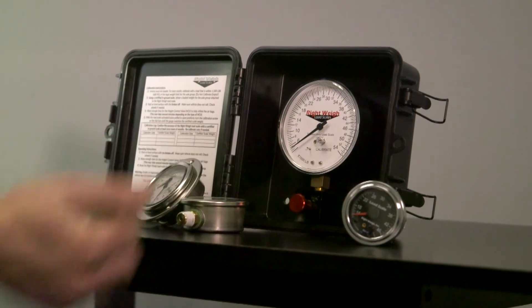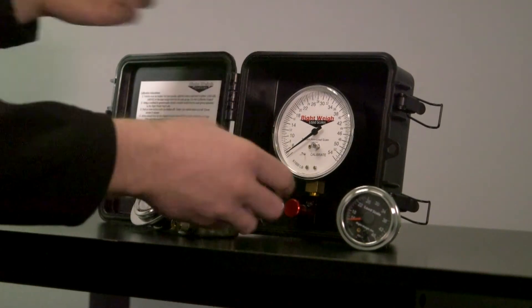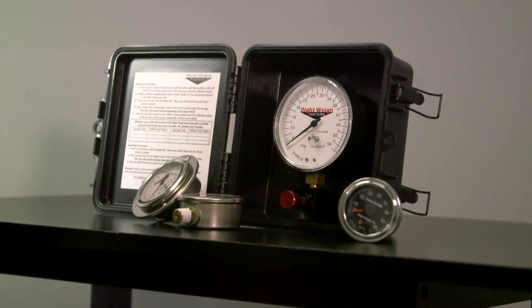It's protected by a push-pull valve, so it's pretty simple. When it's in, it airs off. No air goes to the gauge. You pull it out, it airs up the gauge.